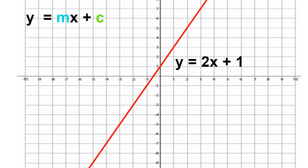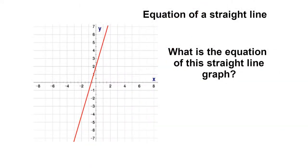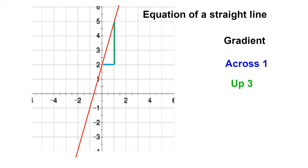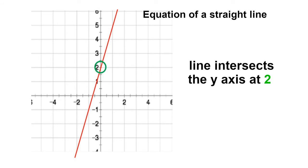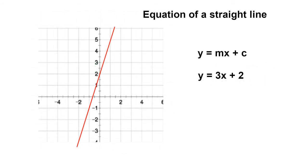Now it's your turn. What is the equation of this straight line graph? You can pause the video and press play when you're ready to reveal the answer. From the diagram, look at the blue line — you can see that I've gone across by one square. Look at the green line — you can see that I've gone up by three squares. So I went up by three and along by one, which as a fraction is three over one, which equals three. Therefore, the gradient of this line is three. The line intersects the y-axis at two, so substituting back in gives y equals 3x plus 2.